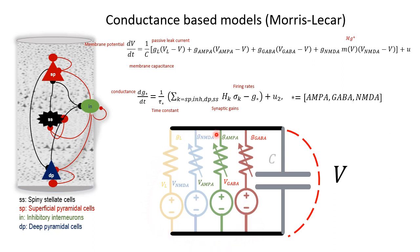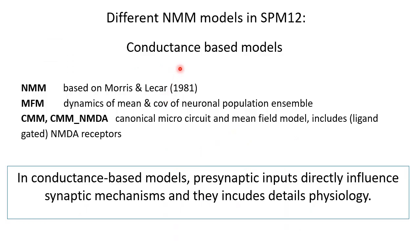In SPM12, there are several variations of neural models known as convolution-type neural mass models, termed so because the synaptic impulse response H(t) maintains a fixed shape regardless of input firing rates. Another type of model in SPM12 is conductance-based models, formulated based on the Morris-Lecar simplified Hodgkin-Huxley model. These models incorporate detailed physiology where the dynamics of the membrane potential include several ion currents such as AMPA, NMDA, and GABA. The rate of change of conductance is scaled by the incoming firing rates, meaning presynaptic input directly influences synaptic responses in the target population.